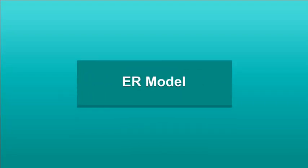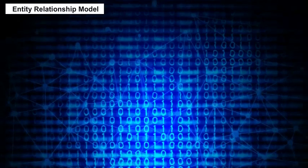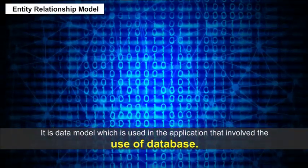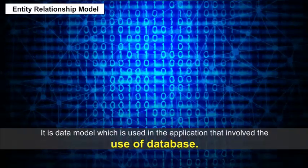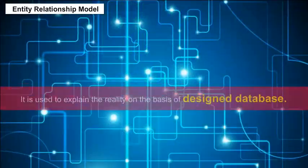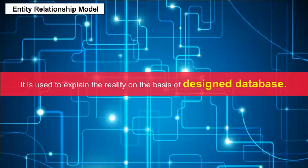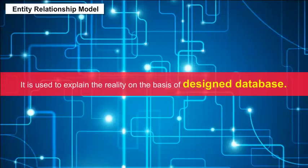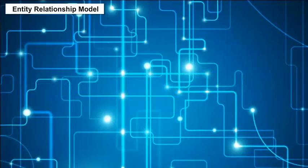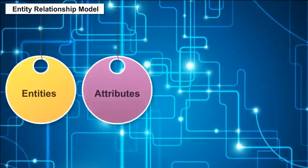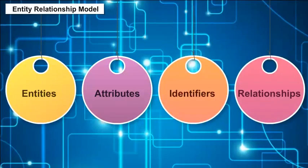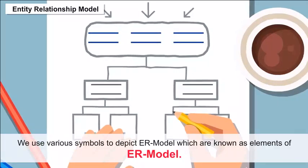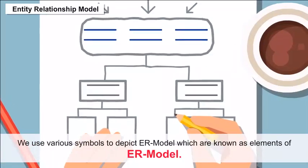ER Model — Entity Relationship Model. It is a data model which is used in applications that involve the use of a database. It is used to explain the reality on the basis of which the database is designed. The components of the ER model are entities, attributes, identifiers, and relationships.